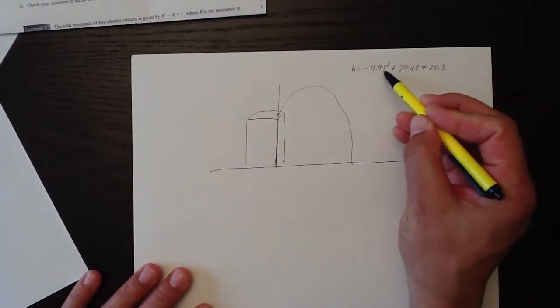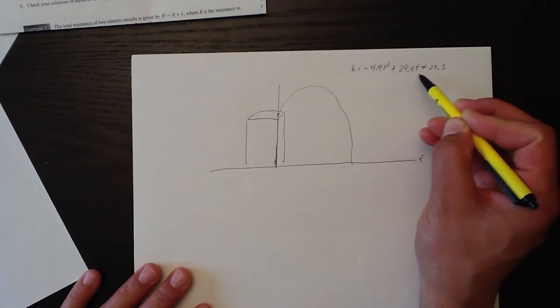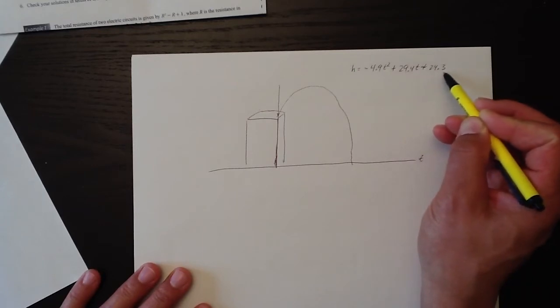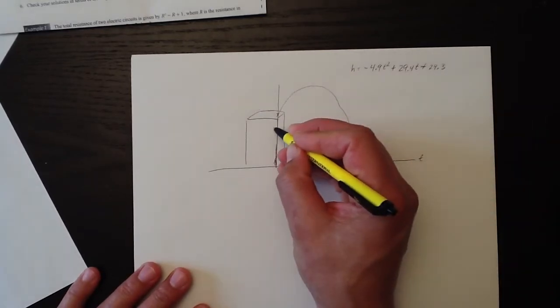So what it means is if t was zero, if time was zero, in other words just as the ball is thrown, this expression becomes zero, this one's zero, and we're left with 24.3. So at time zero, it's 24.3.